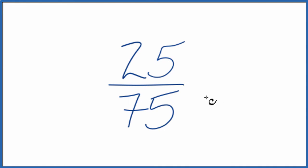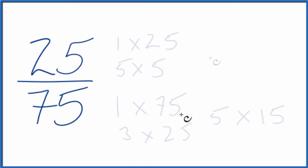To do that we need to find a common factor, something that goes into 25 and 75. So these are the factors for 25 and 75.